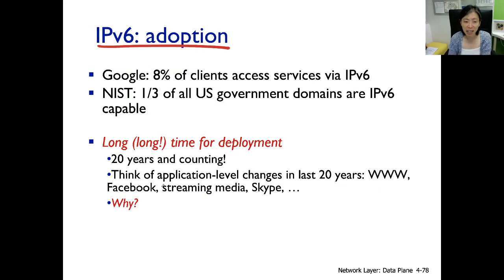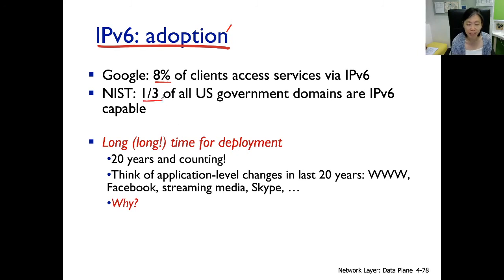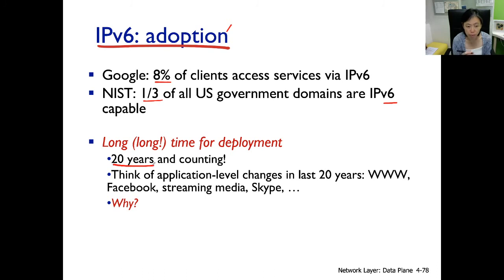This last part is not technical — it's about the adoption of version 6. Google once released that 8% of clients worldwide accessing Google services are IPv6. IETF, a government standards body tracking these statistics, released that 33% of the US government internet is IPv6. The US government is strongly promoting the move to IPv6 — and these numbers come after 20 years of effort.